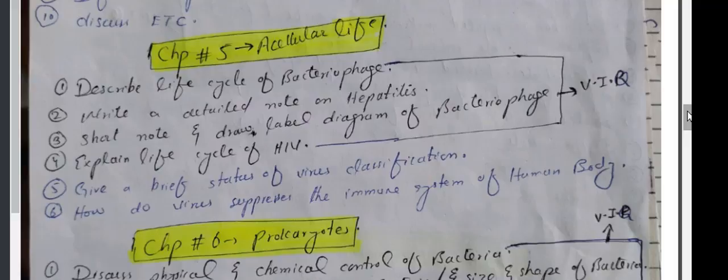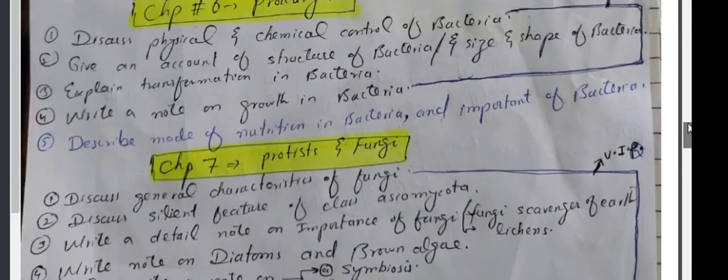Note and draw label diagram of bacteriophage. Explain life cycle of HIV. Give a brief status of virus classification. How do viruses suppress the immune system of human body?